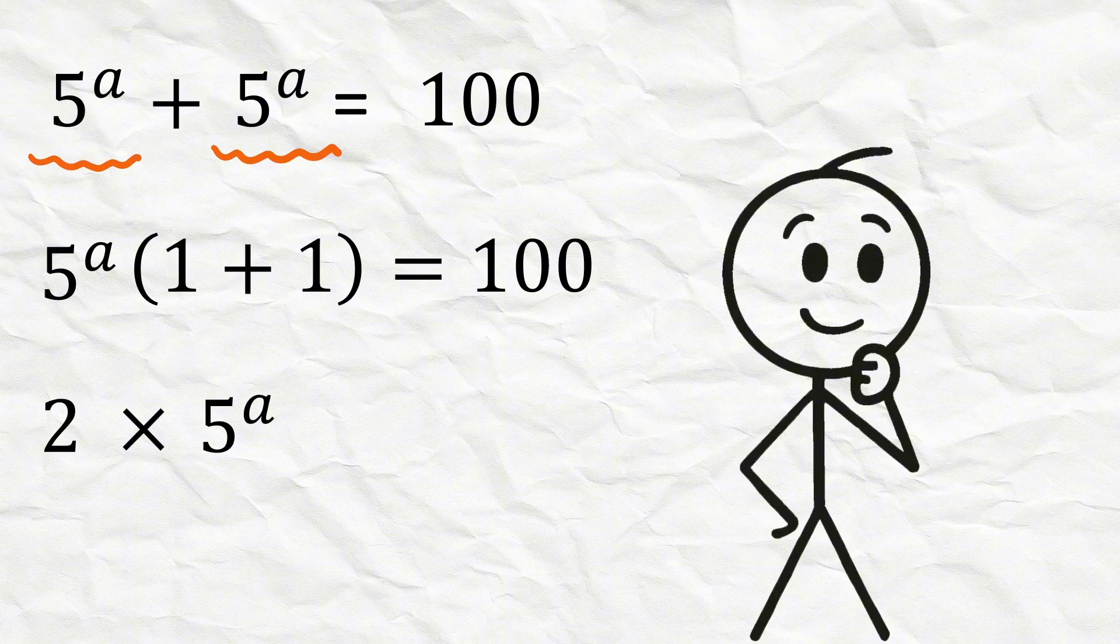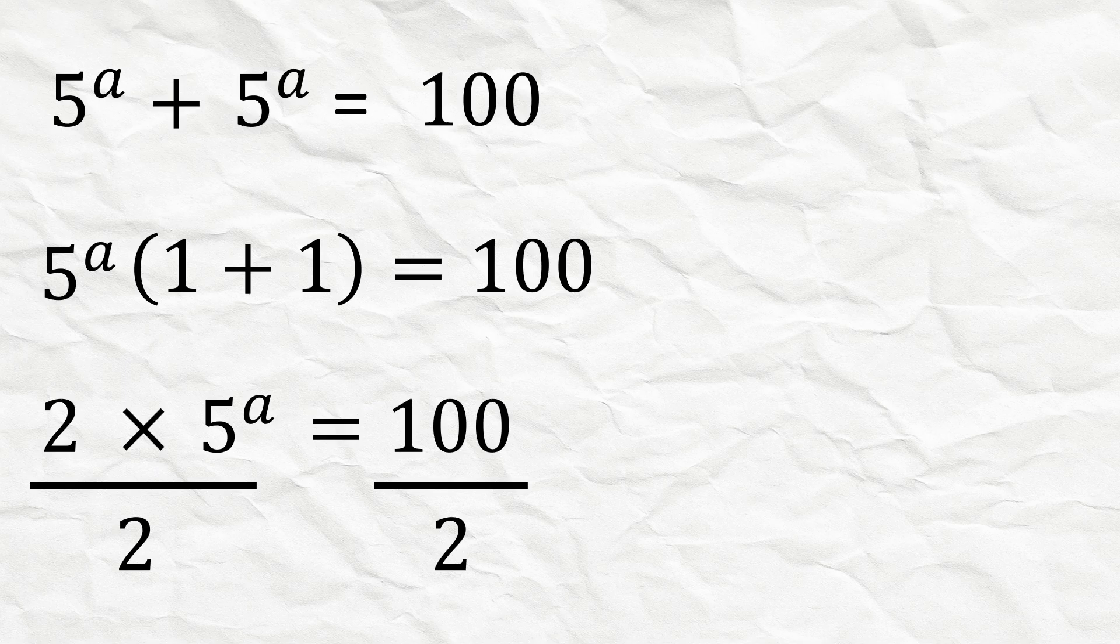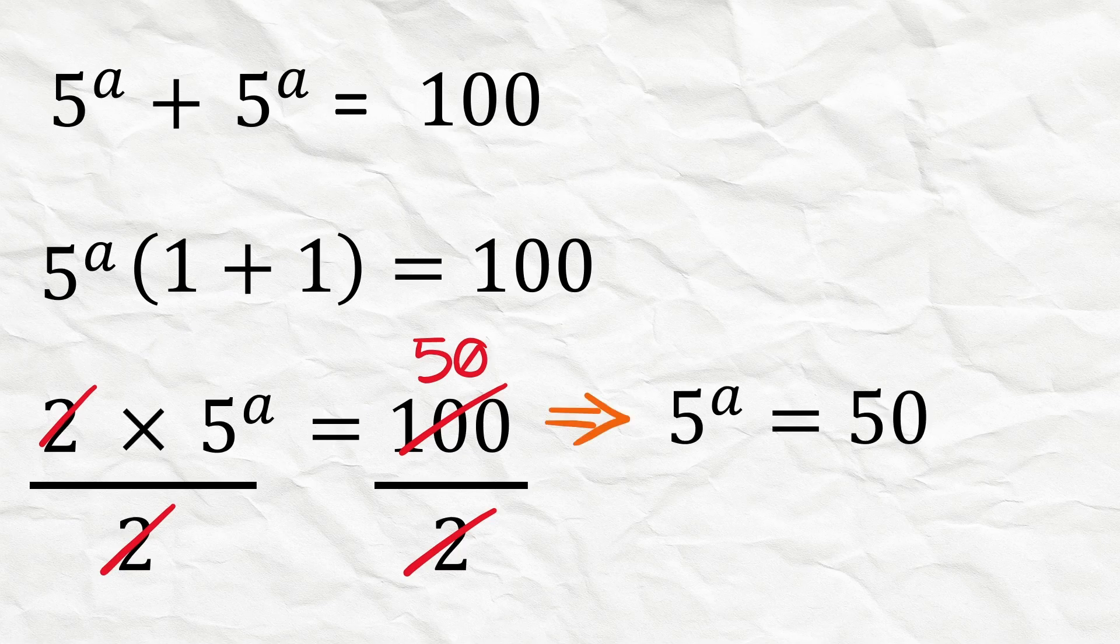Now divide both sides of this equation by 2. Both these 2s will be cancelled out and here 100 over 2 equals 50, so now we have 5 raised to the power of a equals 50.